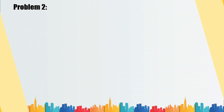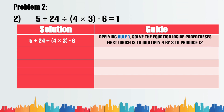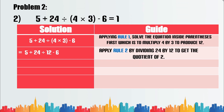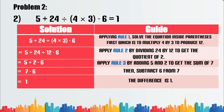Problem number two: 5 plus 24 divided by (4 times 3) minus 6 equals 1. Applying rule 1, solve inside the parentheses first — multiply 4 by 3 to produce 12. Apply rule 2 by dividing 24 by 12 to get the quotient of 2. Apply rule 3 by adding 5 and 2 to get the sum of 7. Then subtract 6 from 7. The difference is 1.